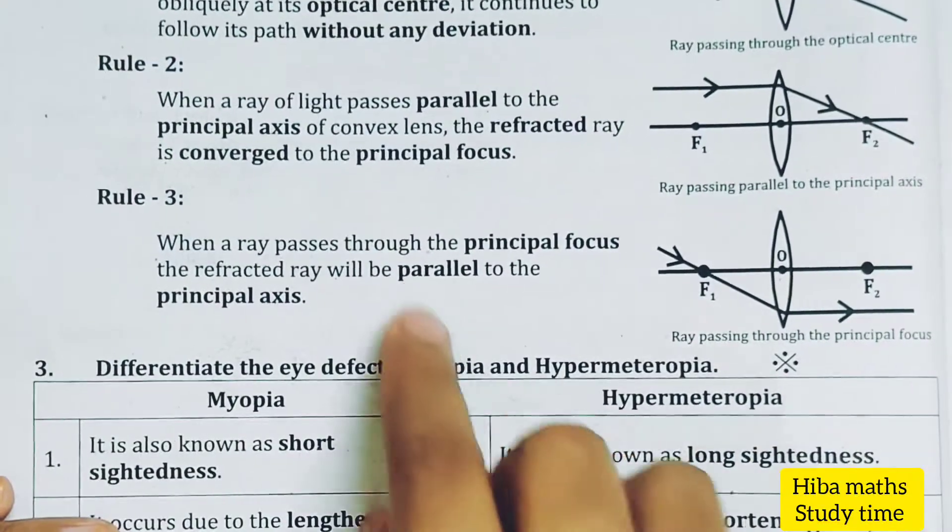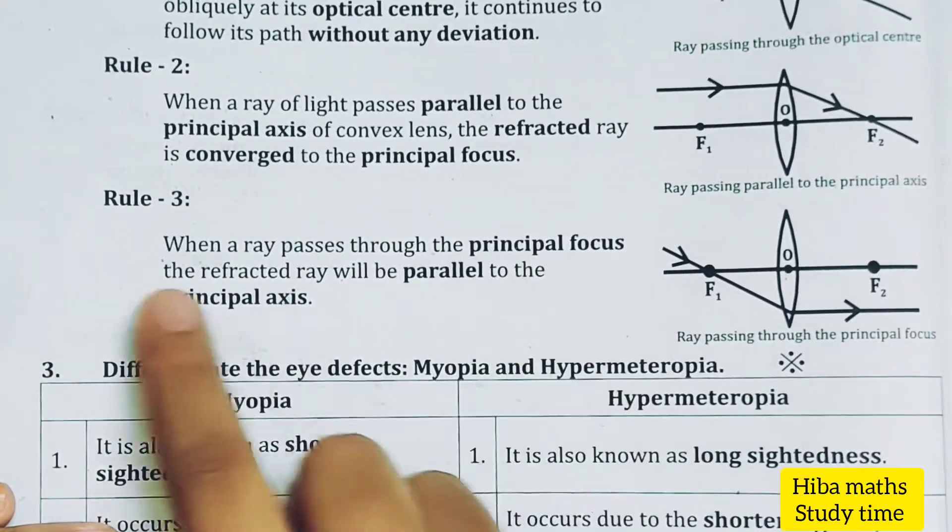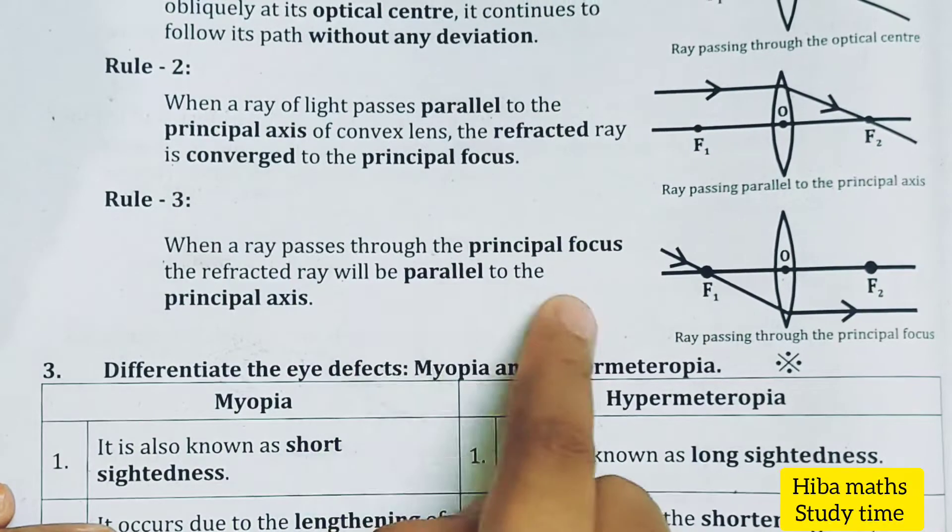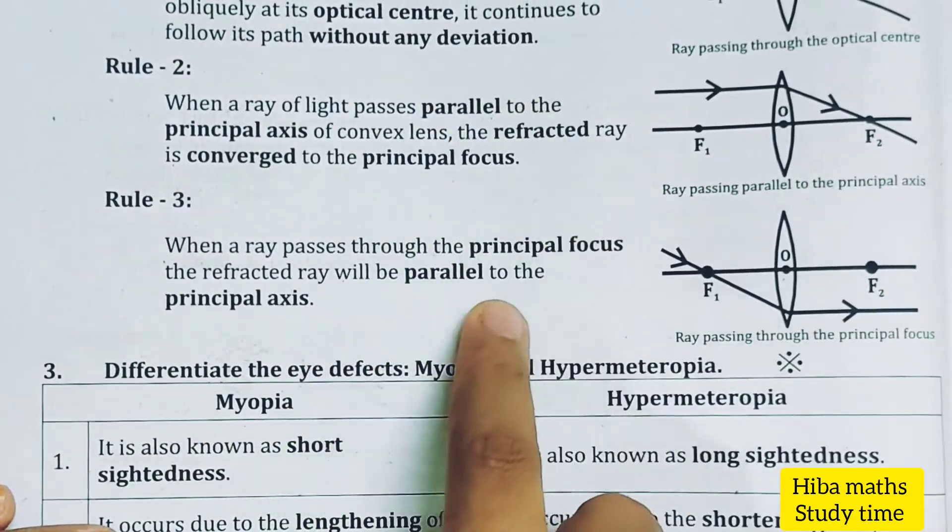When a ray passes through a principal focus, the refracted ray will be parallel to the principal axis. So this is reverse.